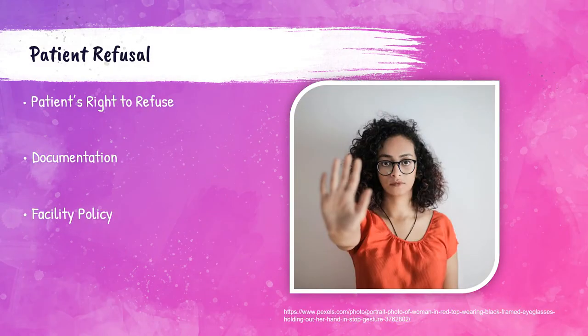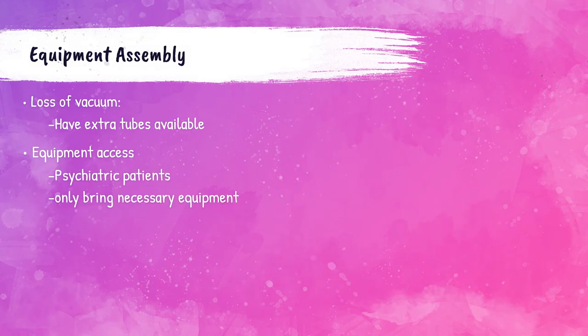Patients have the right to refuse treatment. Blood should never be collected from somebody who is not willing. If the patient refuses, the phlebotomist should report that the patient declined, and the healthcare facility's specific policy regarding patient refusal should be followed. Sometimes the specimen tube used for collection will lose vacuum, which can occur from defective or expired tubes. To help mitigate this, the phlebotomist should have extra tubes handy.